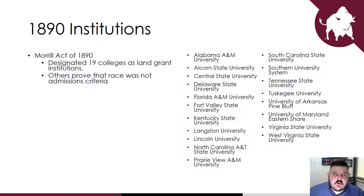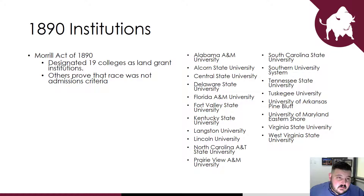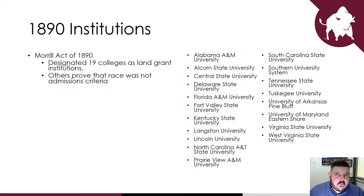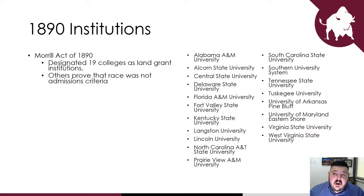1890 institutions are extremely important. The Second Morrill Act of 1890 required each state to show that race was not an admission criteria, or else designate a separate land-grant institution for persons of color. Here is a list of those 1890 institutions — you can see Alabama appears twice. All of the universities except one are located in states that were part of the traditional South, except for Ohio, showing how race played a role in states' decisions.